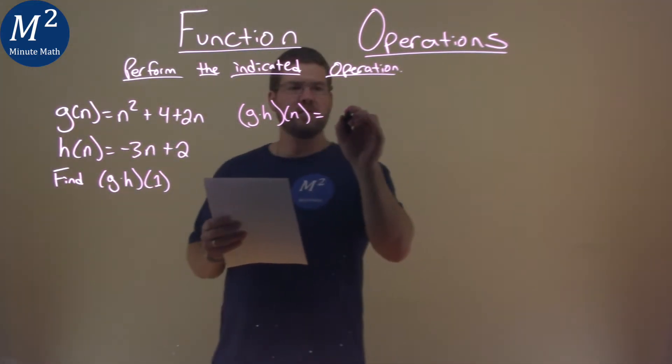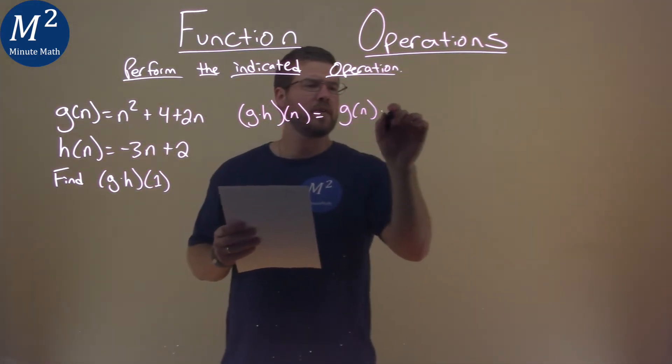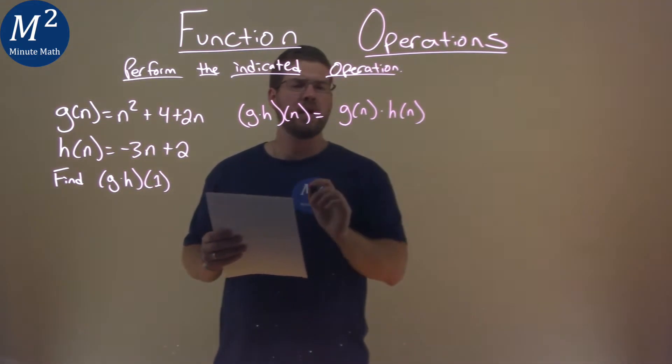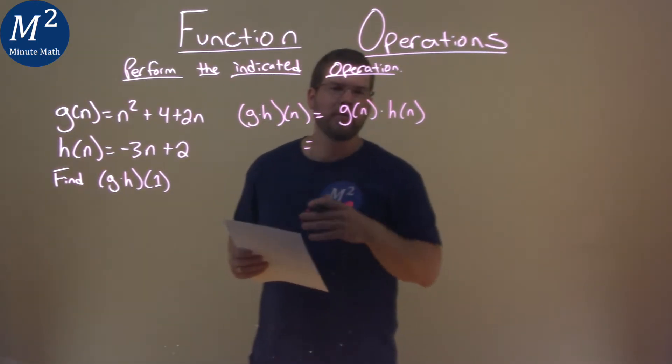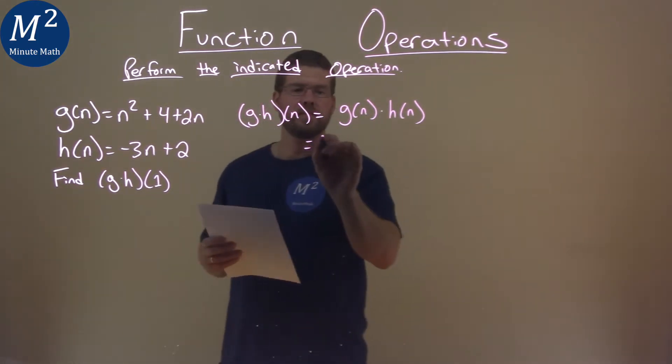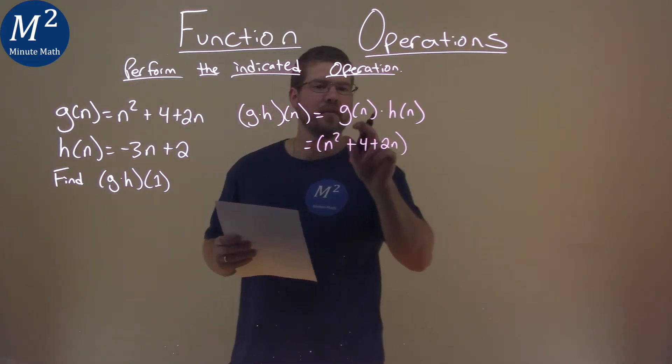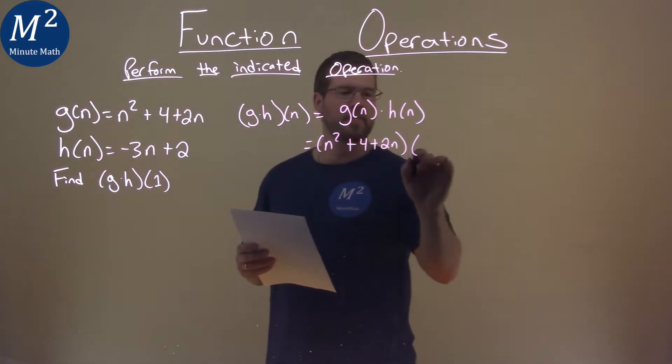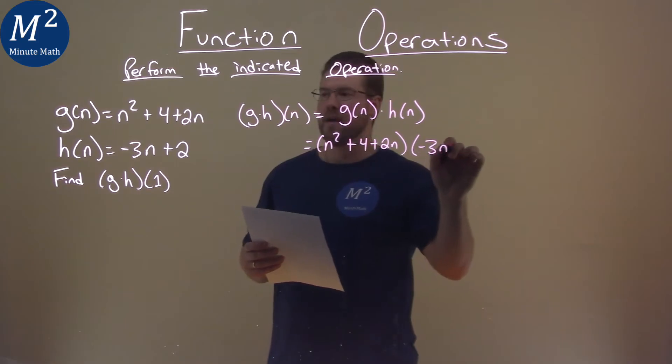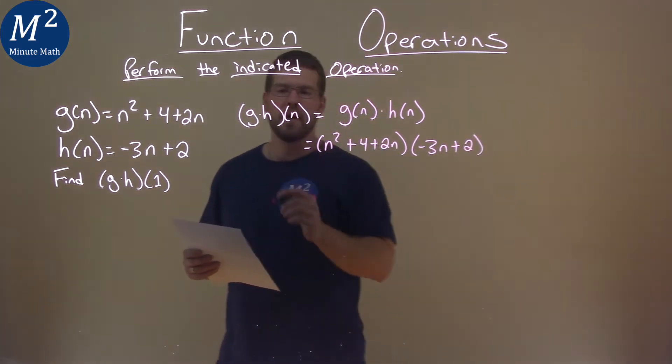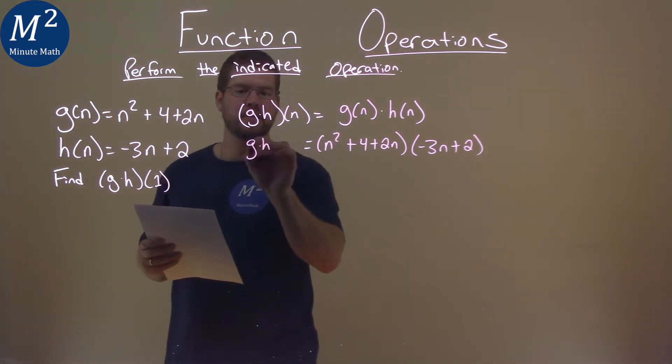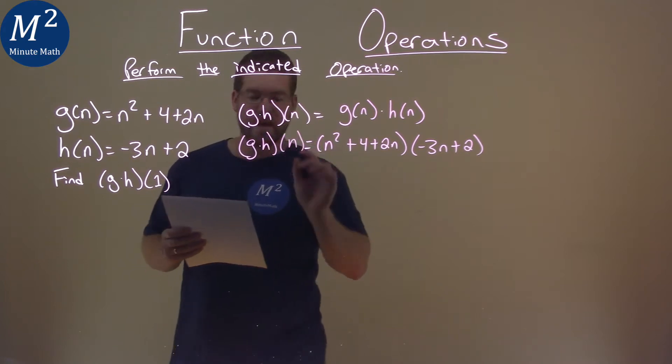So to do that we can show it like this g of n times h of n and then let's show what they are. n squared plus 4 plus 2n is g of n and h of n is that negative 3n plus 2. And again that is our g times h of n here.